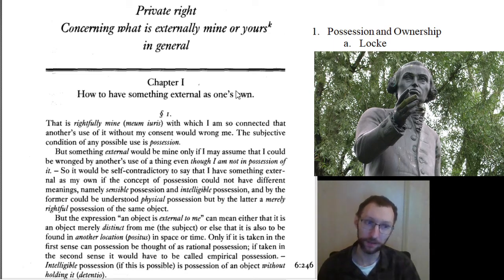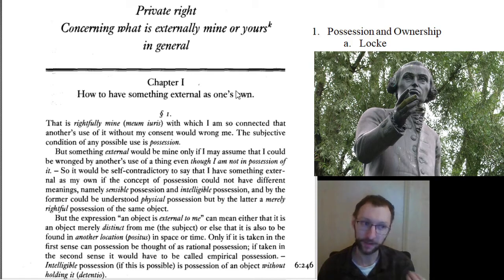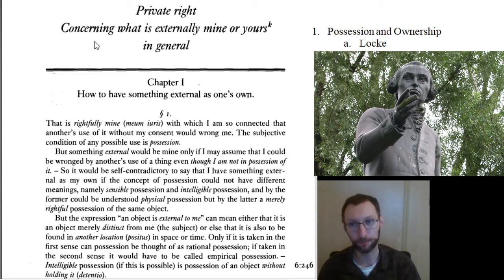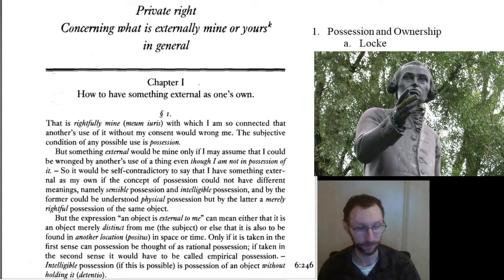Kant has a very different picture of how we come to own something, what rules apply to owning things, and why the state comes into existence. Now that we have Hobbes and Locke on the table, we can start to draw some comparisons between them and Kant.